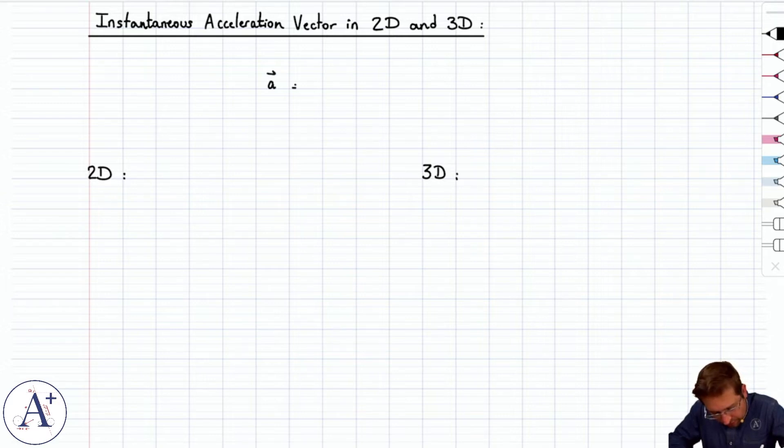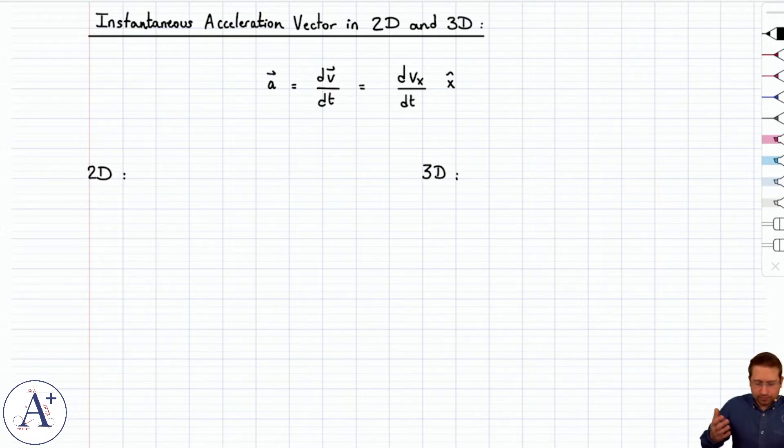So recall that acceleration vector is the derivative of the velocity vector with respect to time, so it is dv/dt, and so far we have been restricted to motion along one direction, so it's been dvx/dt carried by x hat.